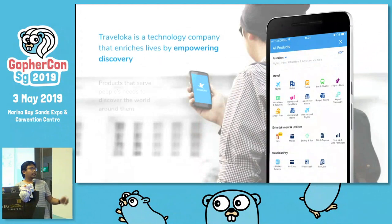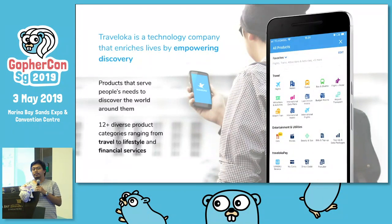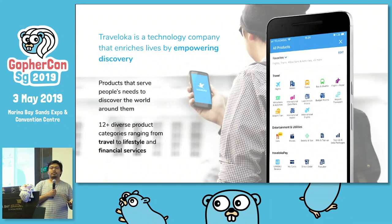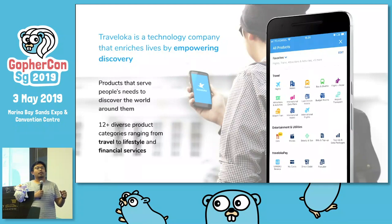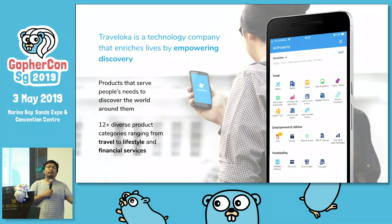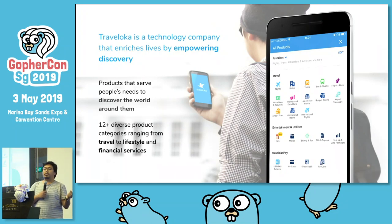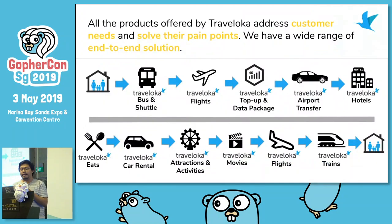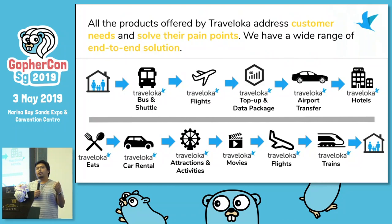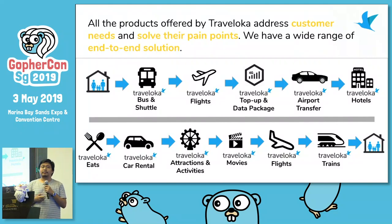Before that, my lead already spoke about Traveloka. Traveloka is a technology company. Right now we are trying to empower discovery for our customers. Previously we were helping people move from one point to another, but now when they're already in a location, we help them discover what they're interested in. We have a variety of products starting from flight and hotel, and recently we released culinary, attraction, and activities products.